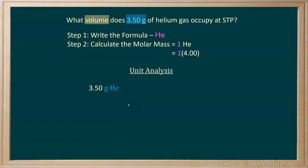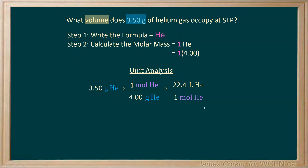So let's do our unit analysis. We have 3.50 grams of helium, and we're going to use our molar mass to convert that into moles. Make sure your units line up correctly so that they cancel. Once you have moles, you can use the molar volume at STP to convert into liters — 22.4 liters on top, one mole on the bottom — making sure the units cancel correctly.